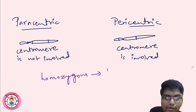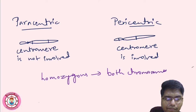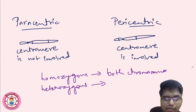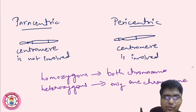In homozygous inversion, inversion is present in both chromosomes. In heterozygous inversion, only one chromosome carries the inversion. These are the terms homozygous and heterozygous, and we will first look at the heterozygous condition, which is most commonly seen.